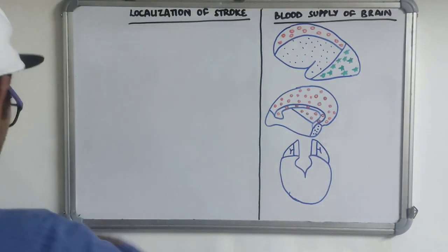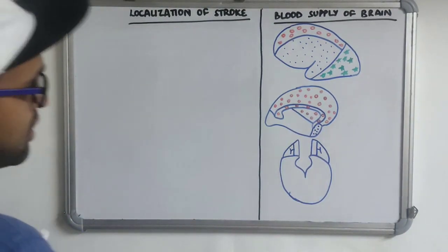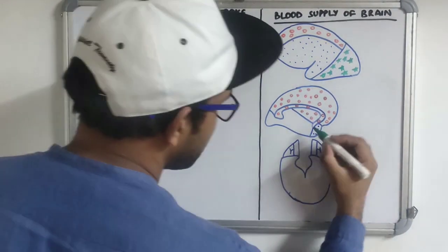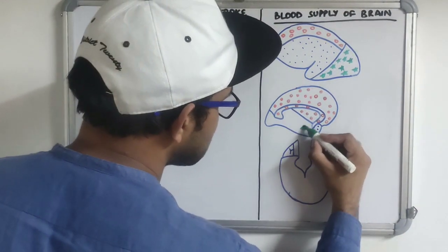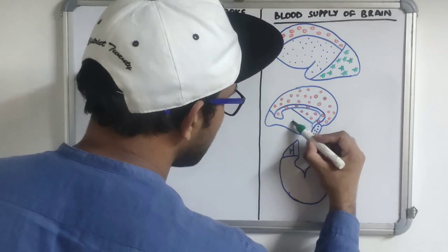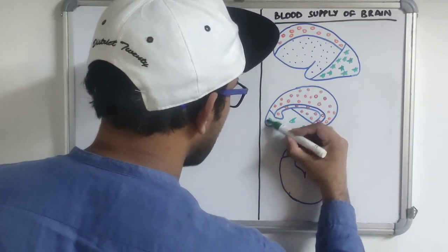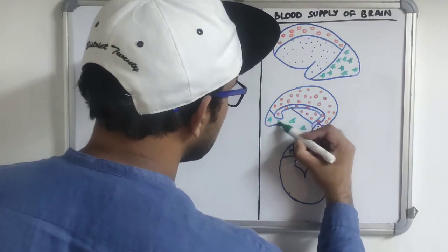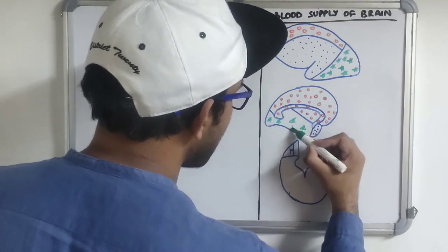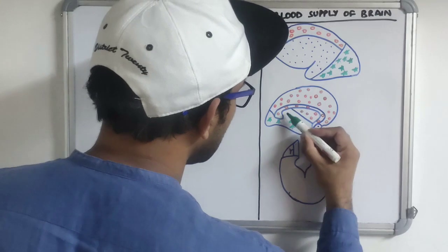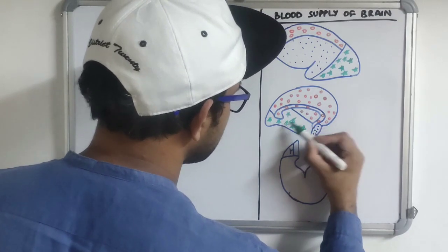The rest of the medial surface of the cerebral hemisphere, including the temporal and occipital lobe cortices, is supplied by the posterior cerebral artery.